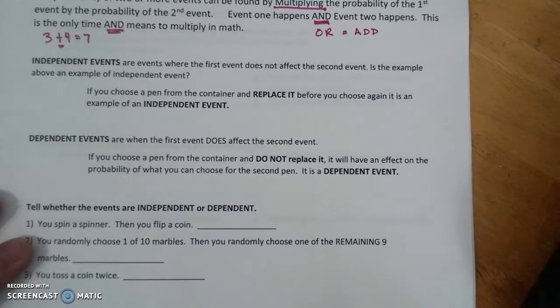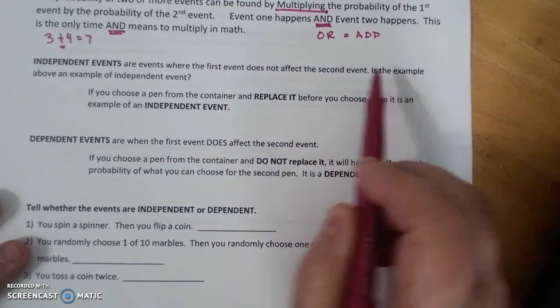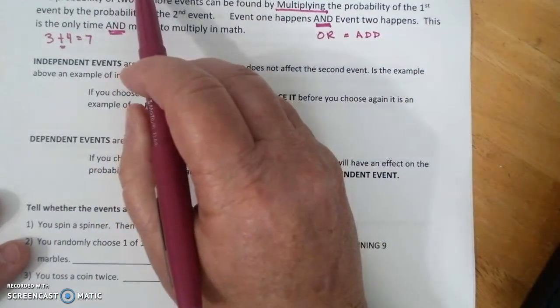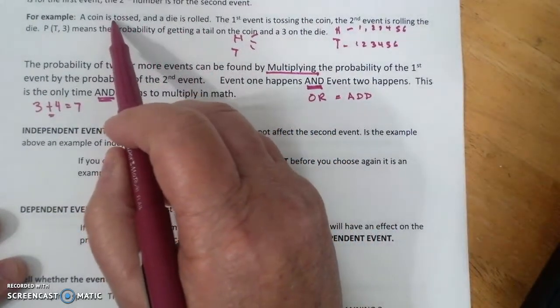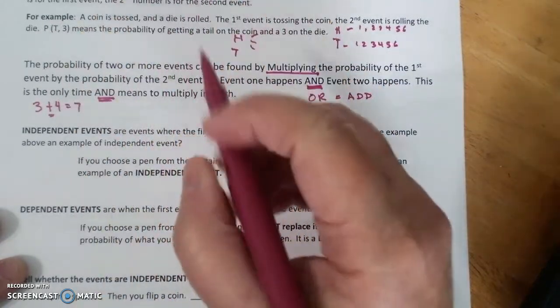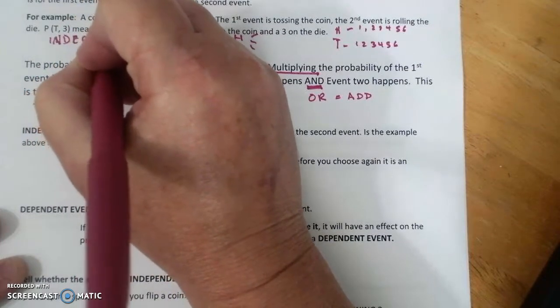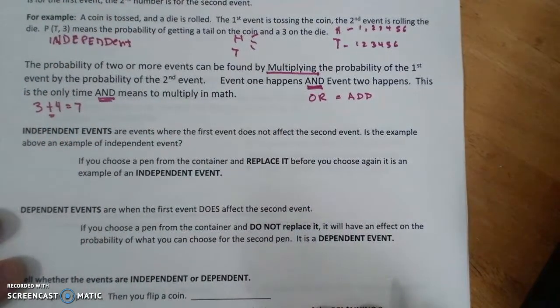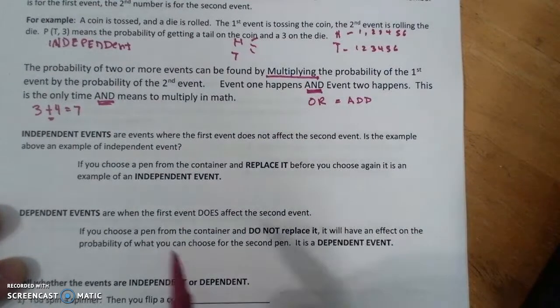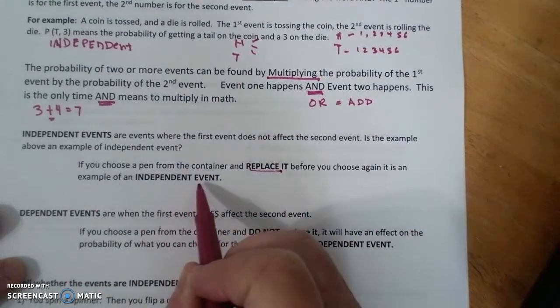Now we're going to get into independent versus dependent. Independent events are events where the first does not affect the second event. The example above is an example of an independent event. So if I toss a coin and then roll a die, does the die being rolled have anything to do with the coin being tossed? That would be a no, and so this is an independent. If you choose a pen from the container and replace it before you choose again, it is an example of independent.